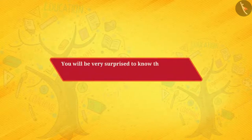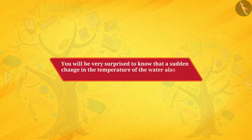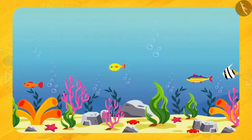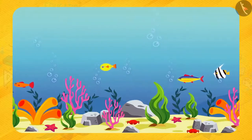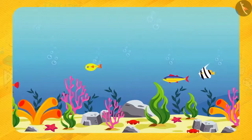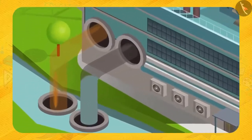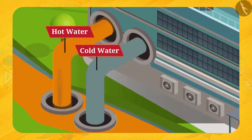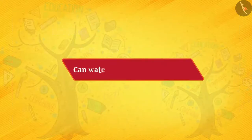You will be surprised to know that a sudden change in the temperature of water also causes water pollution. Aquatic animals are used to a certain range of temperature inside the water. Anything that alters the temperature of water also affects aquatic plants and animals, which again leads to water pollution. For example, factories like thermal power plants take cold water from the reservoir and pour hot water back into the same reservoir, increasing the water temperature and greatly affecting aquatic life.